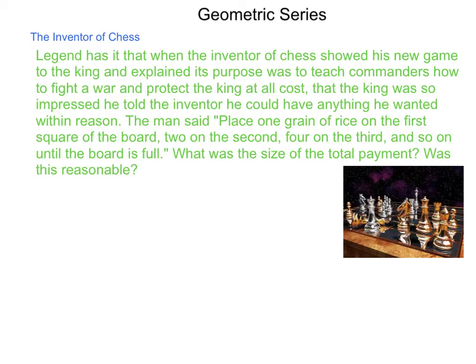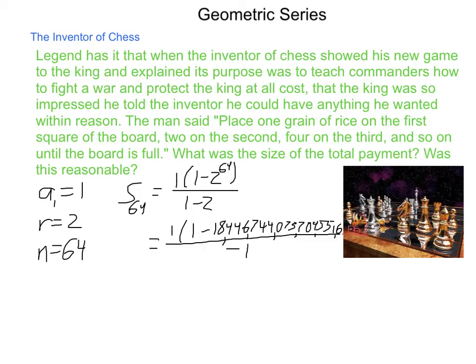What was the size of the total payment, and was this reasonable? We have a sub 1 equals 1, r equals 2, and n, a chess board is 8 by 8, so we'll have 64 items. The sum of these 64 items equals 1 times 1 minus 2 to the 64th power, all divided by 1 minus 2. That equals 1 times 1 minus 18,446,744,073,704,551,616, all divided by negative 1.